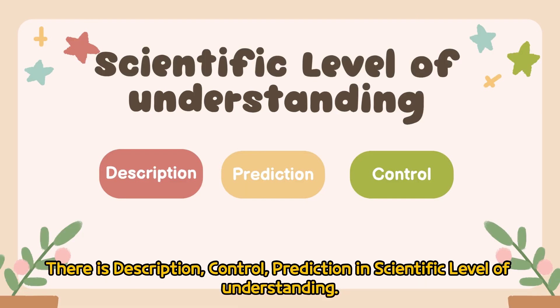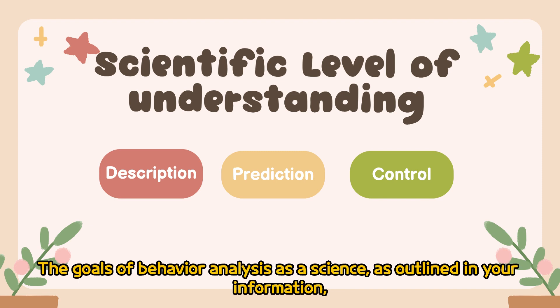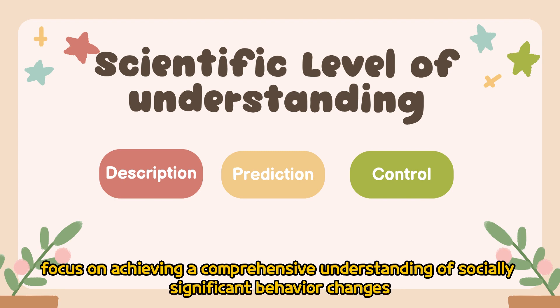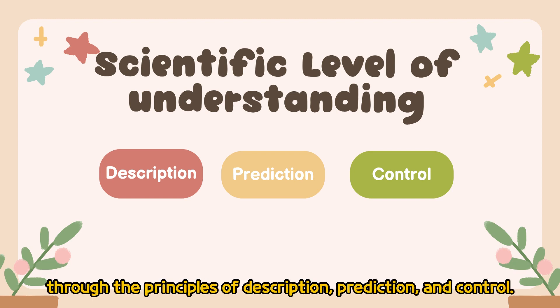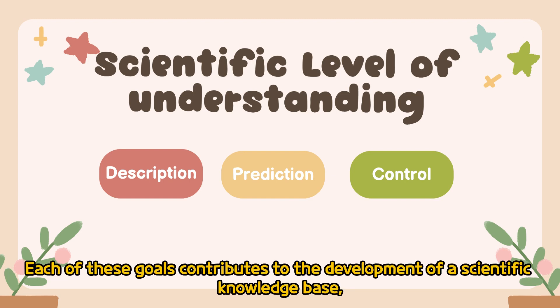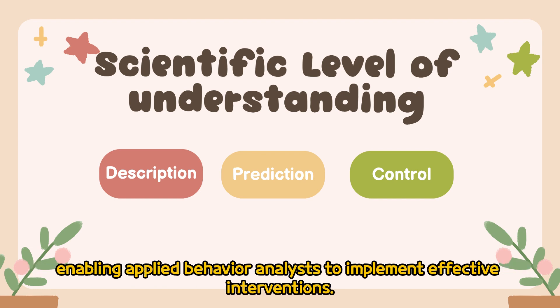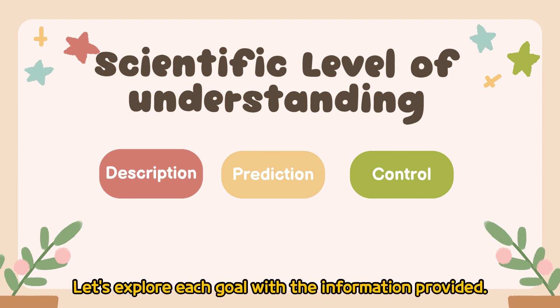There is Description, Control, and Prediction in the scientific levels of understanding. The goals of behavior analysis as a science focus on achieving a comprehensive understanding of socially significant behavior changes through the principles of Description, Prediction, and Control. Each of these goals contributes to the development of a scientific knowledge base, enabling applied behavior analysts to implement effective interventions. Let's explore each goal with the information provided.